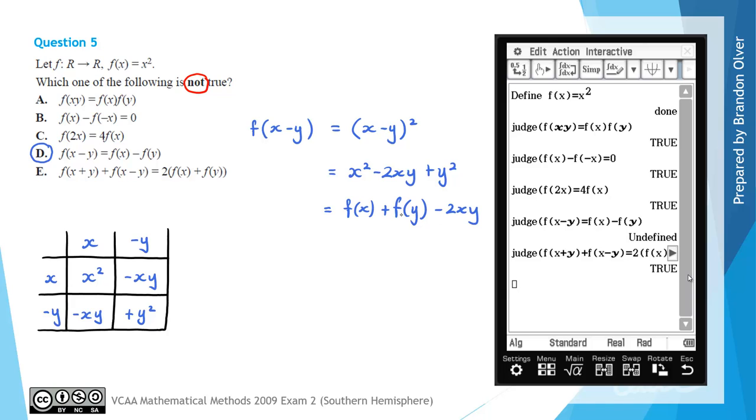So that can't be simplified in any way to f of x take f of y, which is what the right-hand side of option D was. So that's another way of showing that this wasn't true, making D the correct answer for question 5.